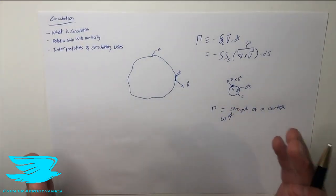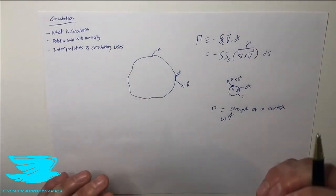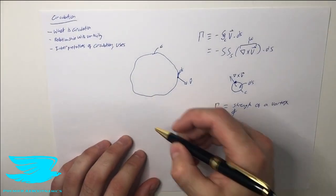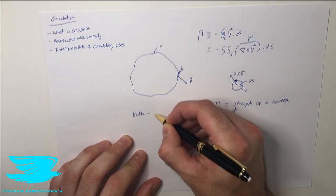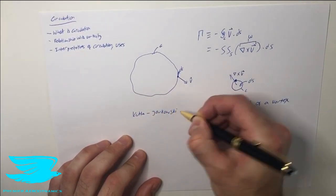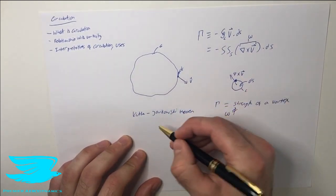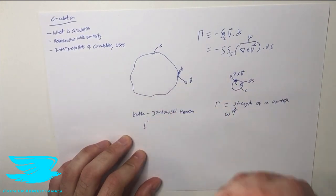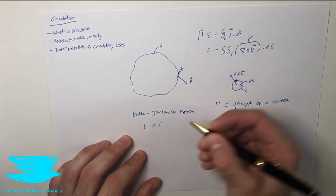The other interpretation of the circulation is it relates to the lift. And this is a really cool little feature here. So there's something called the Kutta-Joukowsky theorem. Kutta, K-U-T-T-A, Joukowsky, J-O-U-K-O-W-S-K-I theorem. And this states that the lift per unit span is proportional to the circulation.